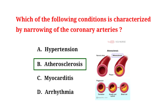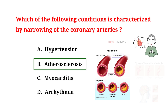The narrowing of coronary arteries in atherosclerosis is primarily due to the buildup of plaque. Plaque is made up of fat, cholesterol, calcium and other substances found in the blood. Over time, this plaque hardens and narrows the arteries, reducing blood flow to the heart muscle. This process is called atherosclerosis and it can lead to serious conditions such as heart attacks and strokes.